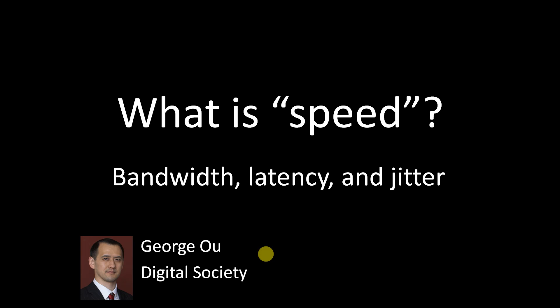The word speed gets tossed around a lot in discussions about broadband and internet performance, but it doesn't really give a good representation of how networks perform. Network engineers use fancy terminology like bandwidth, latency, and jitter to describe the performance of a network, but it gets very confusing to non-engineers. In this tutorial, I'll try to explain these concepts in plain English.